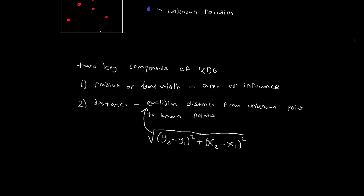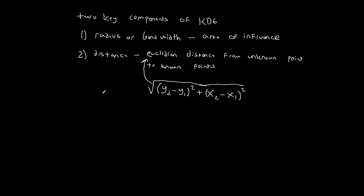So these are the two key components of every single kernel density estimator. What I want to do is wrap up with one last thing. This explains how you calculate for a single point.